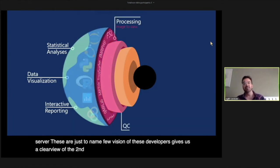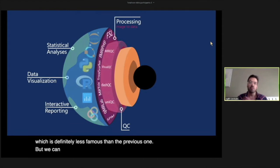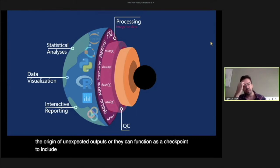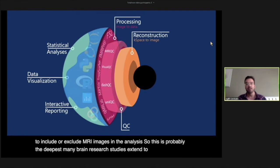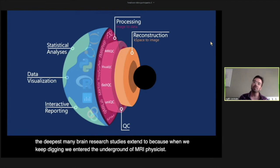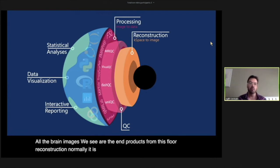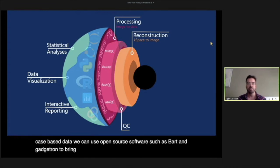When the crust is transparent, we can see the next layer: processing. We have an arsenal of powerful open source tools to extract information from MR images — SPM, FSL, MRtrix, FreeSurfer, just to name a few. The next layer is quality control, which is less famous but we can benefit greatly from quality control reports generated by open software. They can help identify the origin of unexpected outputs or function as checkpoints to include or exclude MR images. This is probably the deepest layer many brain research studies reach, because when we keep digging we enter the underground of MR physicists.